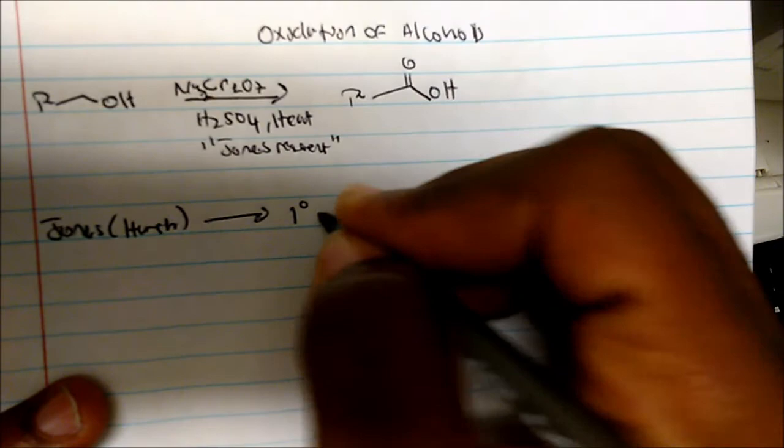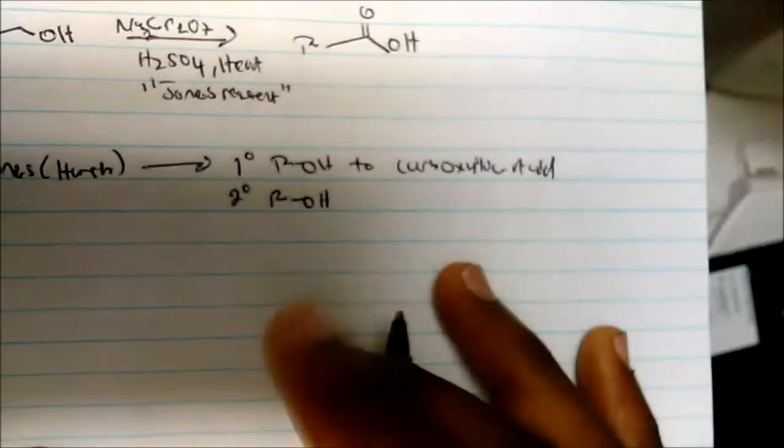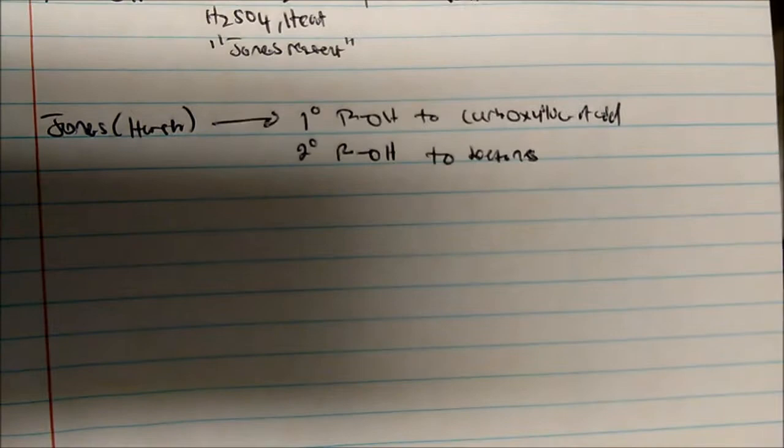And so this oxidizes primary alcohols to carboxylic acids. I can't spell carboxylic right now. And then secondary alcohols - this oxidizes secondary alcohols to ketones. So these are terms that you're going to have to remember.